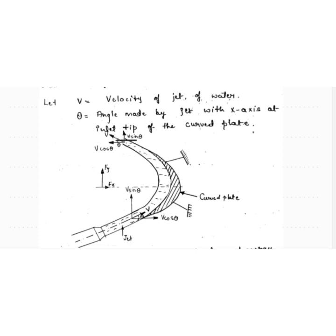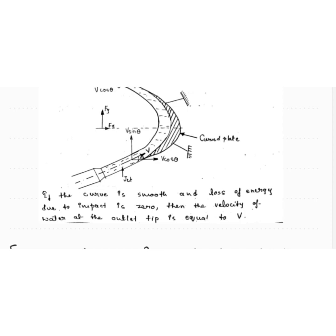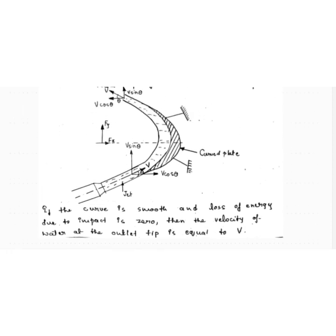The same angle theta will be at the outlet as well, since the plate is symmetrical. Let d be the diameter of the jet, so the area of the jet A = (π/4)d². We consider the plate to be smooth, so there is no loss of energy, meaning the velocity of the water at both inlet and outlet will be equal to v.